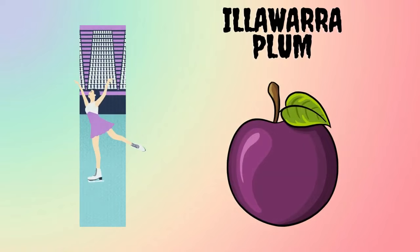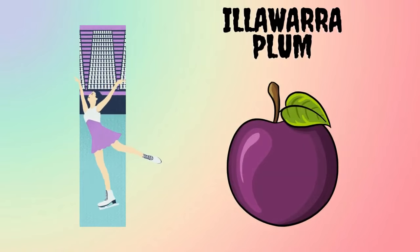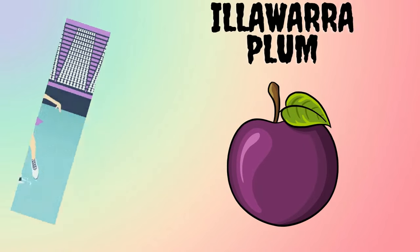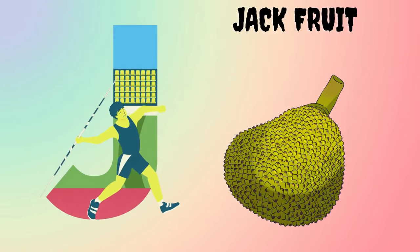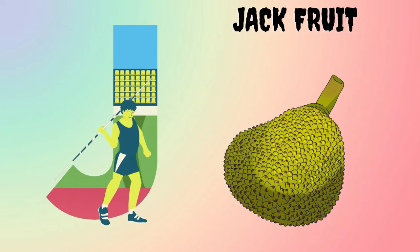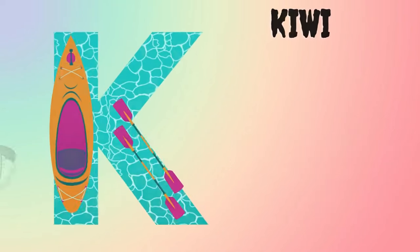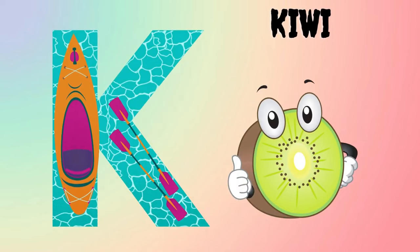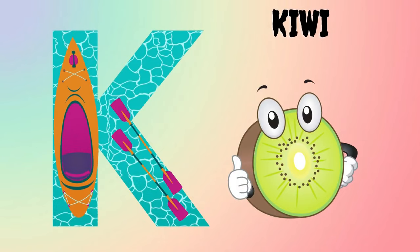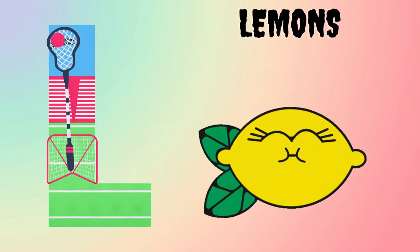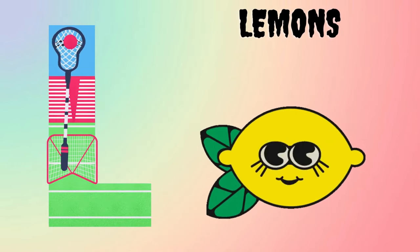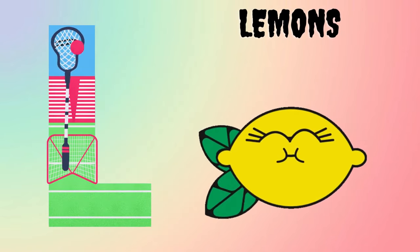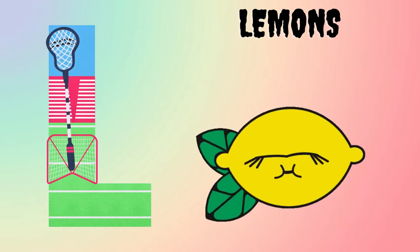I is for Illawarra Plum. J is for Jackfruit. K is for Kiwi. L is for Lemons.